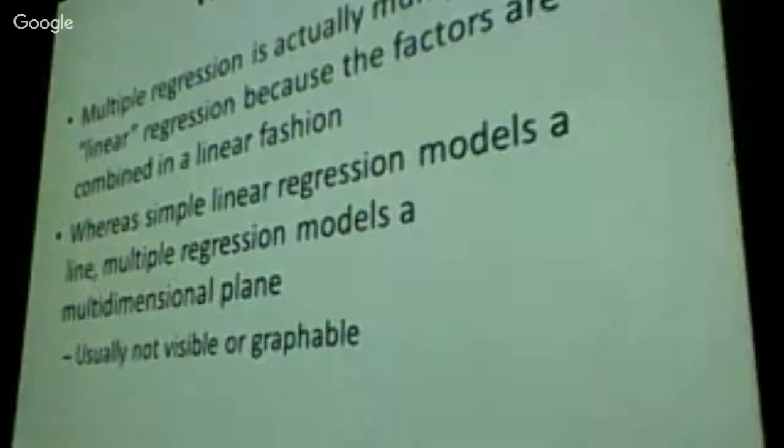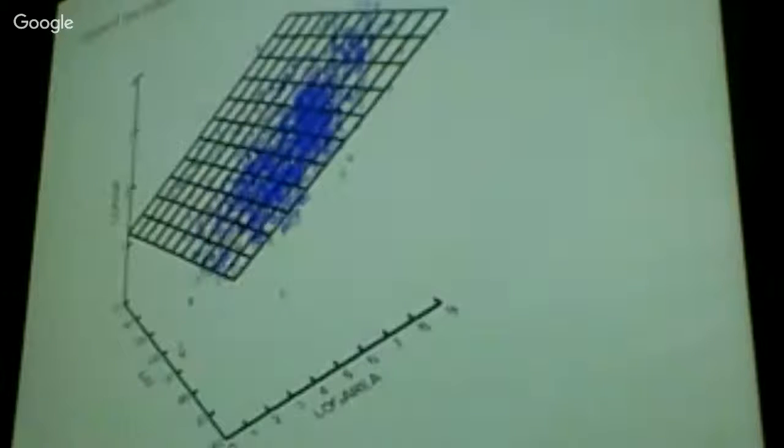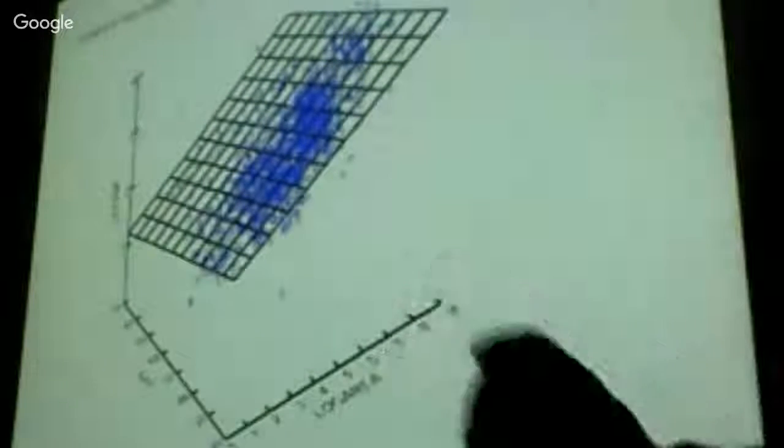So you can't really visualize this all that well. But we talked about in the past that even though there are three independent variables here, it's still a linear relationship. Why is it a linear relationship? Say the word linear. The order, exactly. It's the order of magnitude. So each of these are still just an order of magnitude of one.